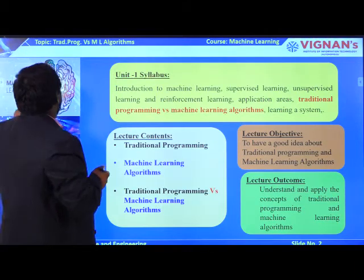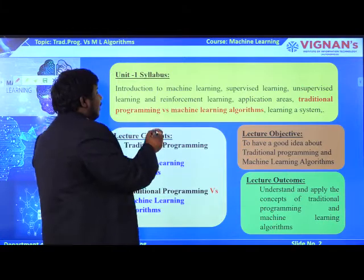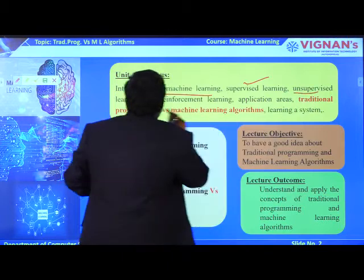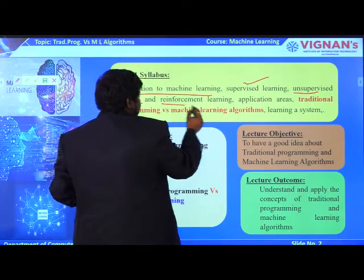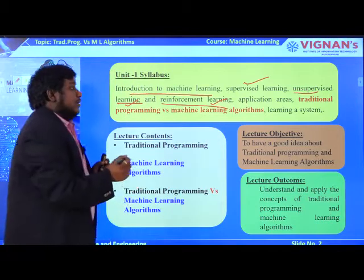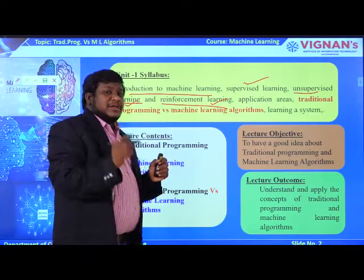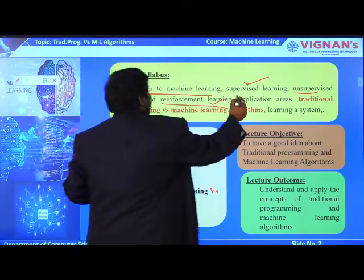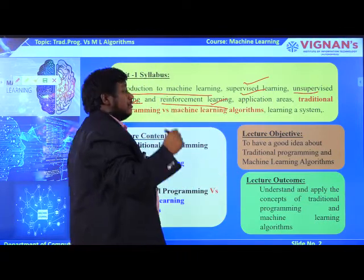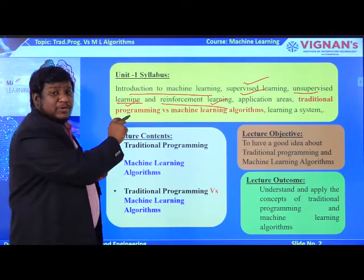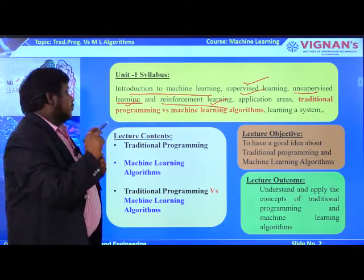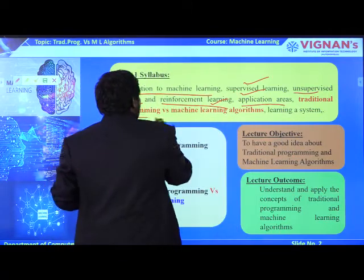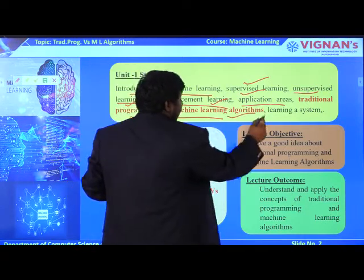So far we have covered introduction to machine learning, supervised learning, unsupervised learning, and reinforcement learning in our previous lectures. In every lecture I also cover application areas — for supervised learning, unsupervised learning, and reinforcement learning — including real-time applications. Today we are going to discuss traditional programming versus machine learning algorithms and what the main difference between them is.